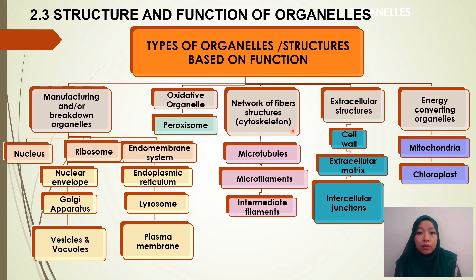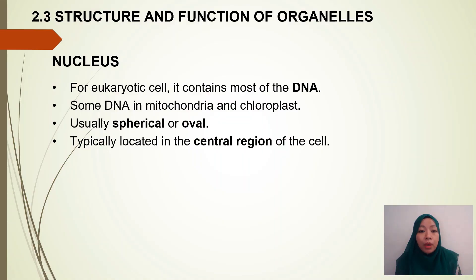The network of fiber structures is the cytoskeleton, which is divided into three: microtubules, microfilaments, and intermediate filaments. Extracellular structures are cell wall, extracellular matrix, and intercellular junctions. The last category is energy-converting organelles — mitochondria and chloroplast. Next, we are going to look into the first organelle, which is the nucleus.